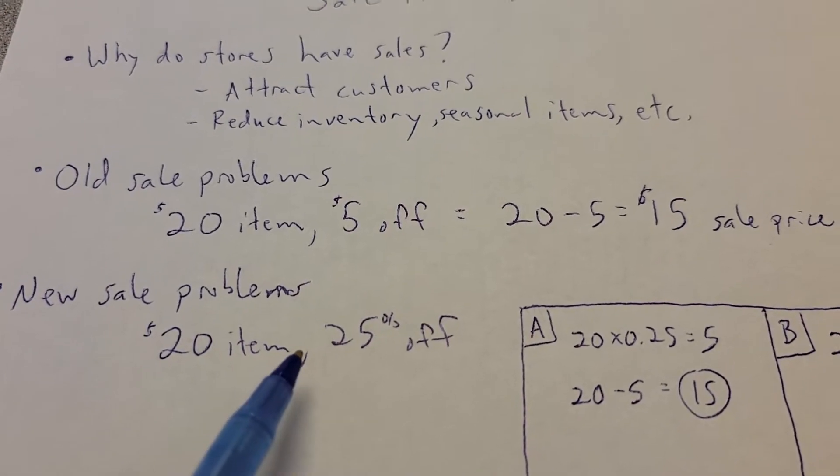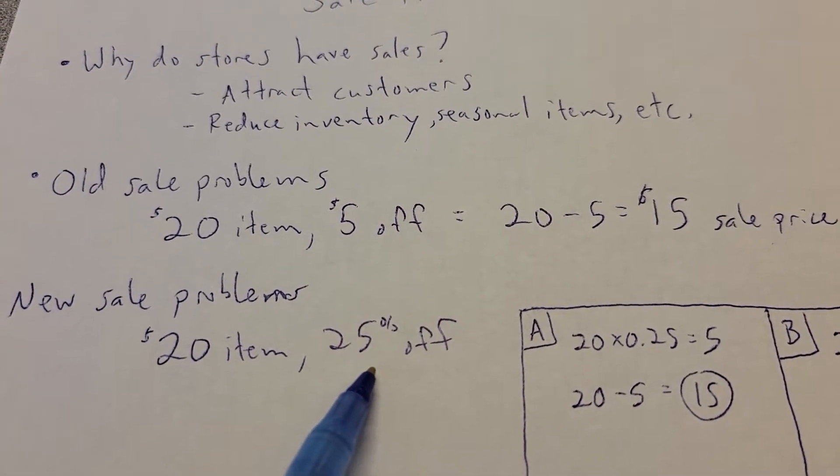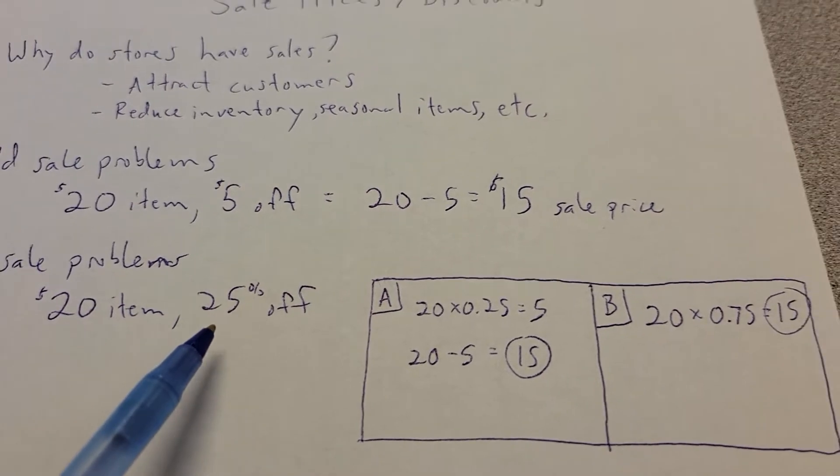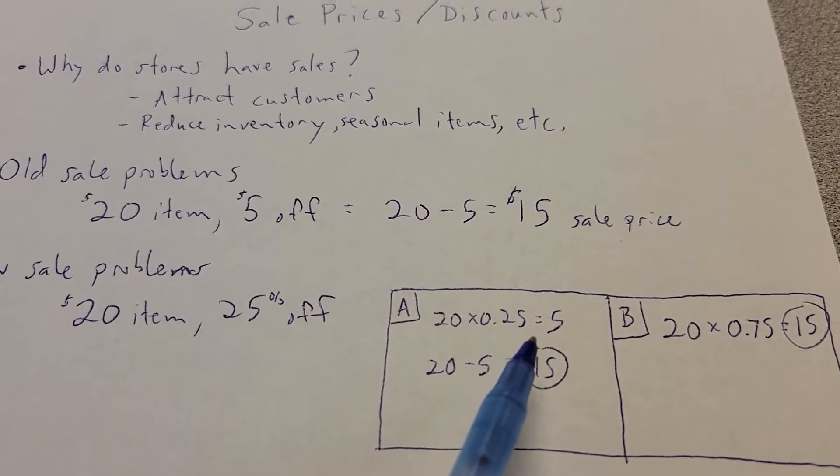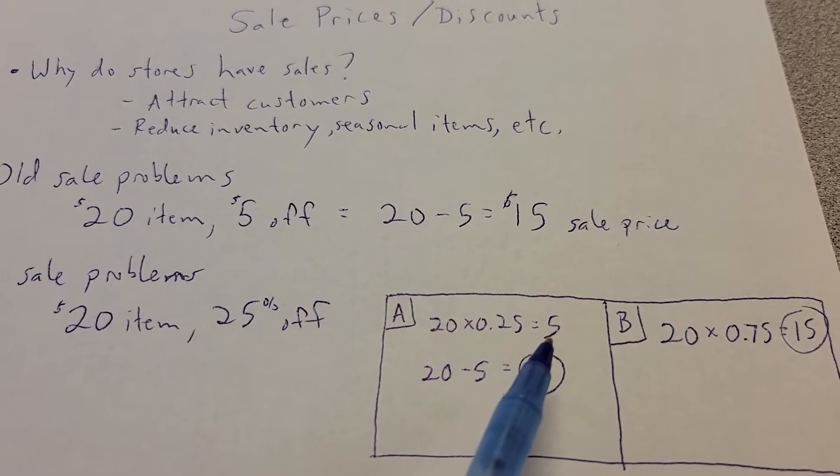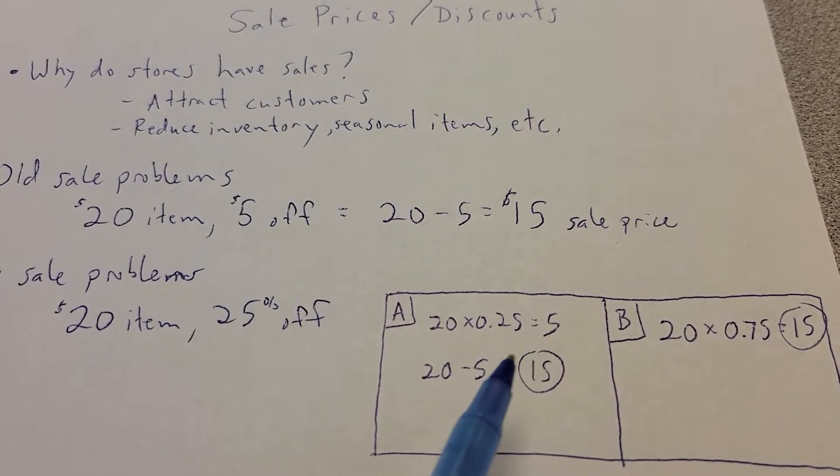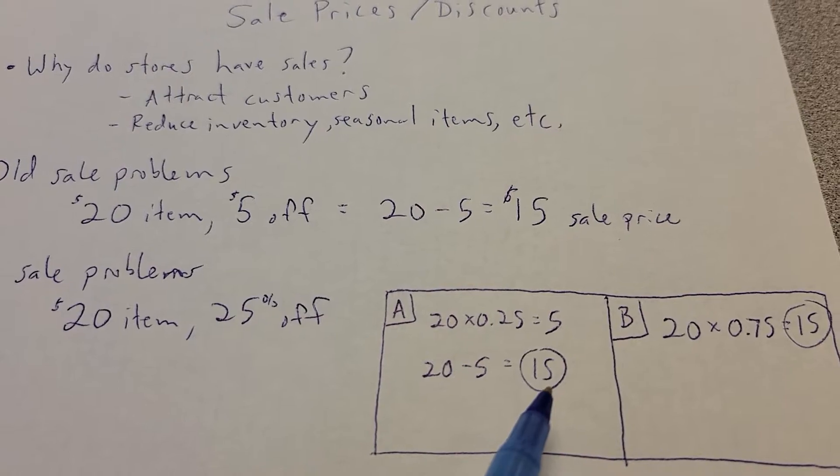New sale problems, $20 item, but now it's 25% off. There's two ways to do these kind of problems. You could say 20 times 0.25, 25% in decimal form, gives you $5. That's what comes off the price. So 20 minus that 5 gives you $15.